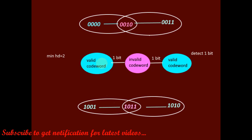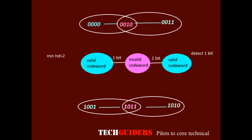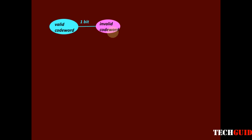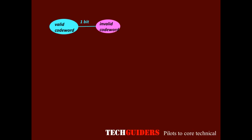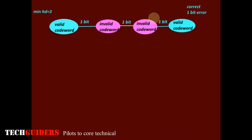Hence a minimum Hamming distance of 2 is not enough to correct a 1-bit error. The condition is: if a 1-bit error occurs on a valid codeword, it should generate an invalid codeword which does not overlap with an invalid codeword generated by a 1-bit error on another valid codeword. For this, at least a distance of 3 is required. Thus, to correct a 1-bit error, the minimum Hamming distance required is 3.